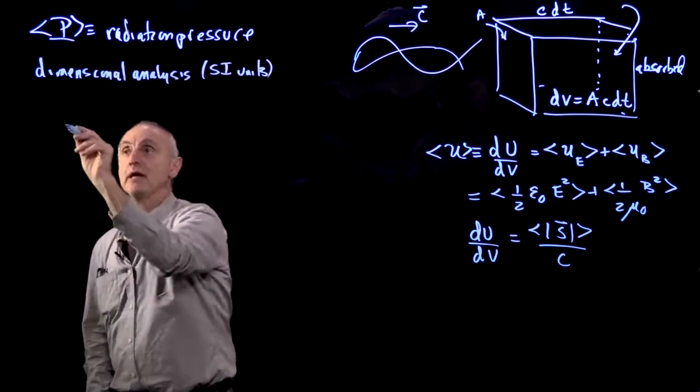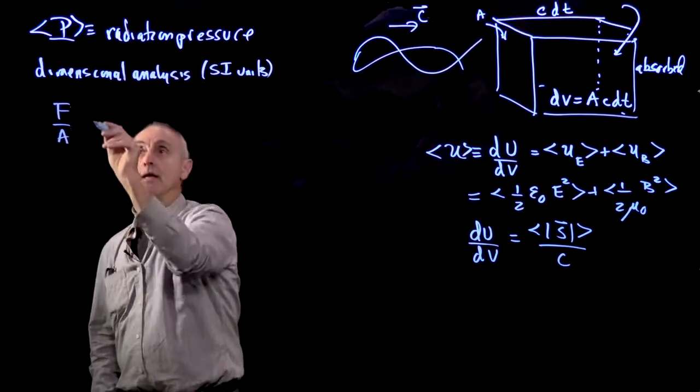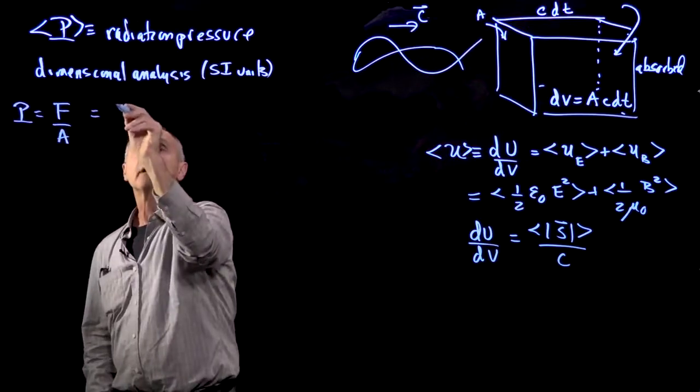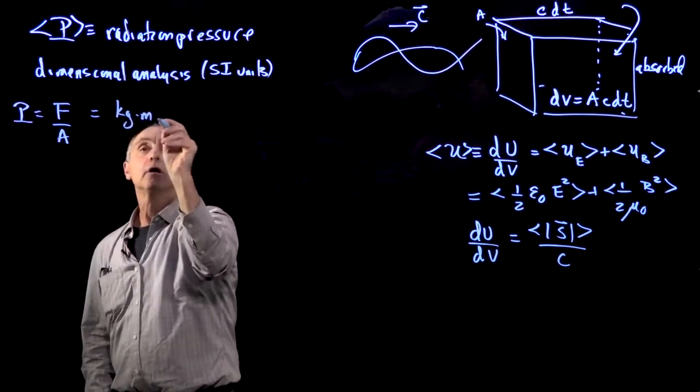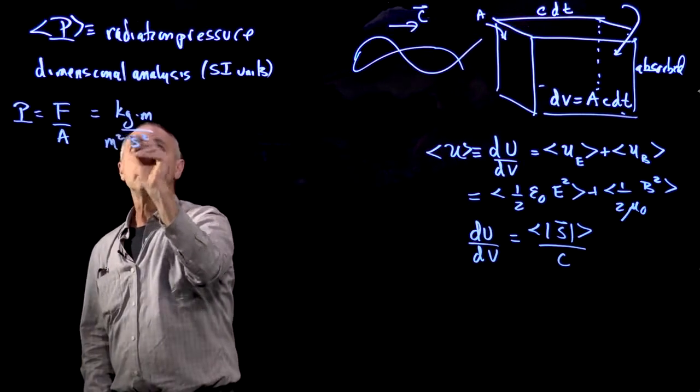We know that pressure is dimensionally force over area. In SI units, that's kilogram meter per second squared, that's force, divided by meters squared.